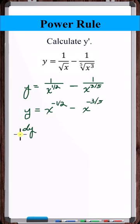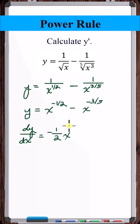Now, just use the power rule in each term. Bring the exponent out front and then subtract 1 from the exponent.